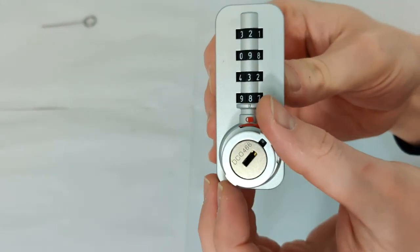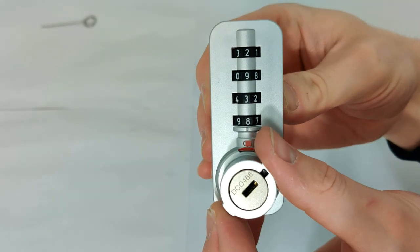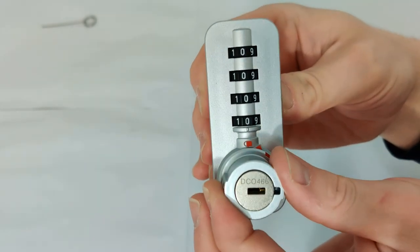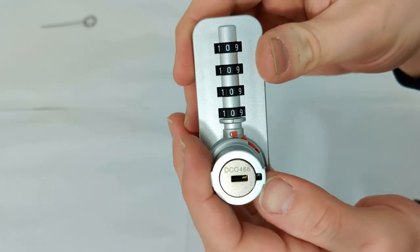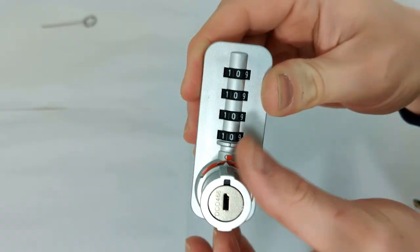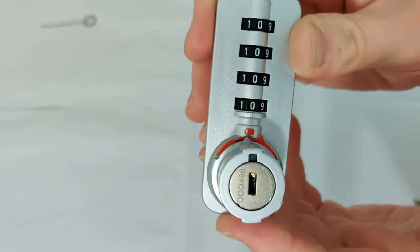So to reset it we turn the dial further down to the right and the code should scramble like this. You can see that it scrambled all back to zero. Now we turn the dial back up to the top and now the code has been fully reset on this lock.